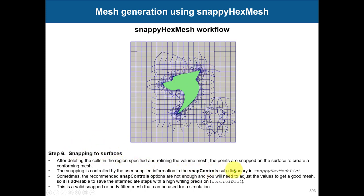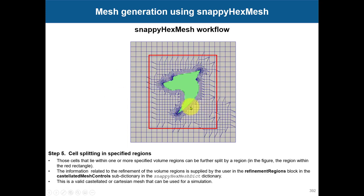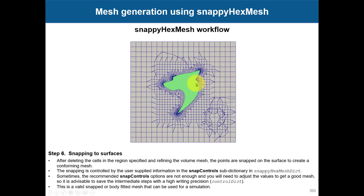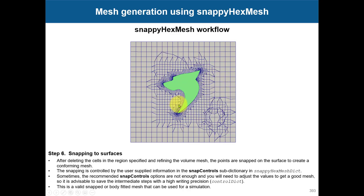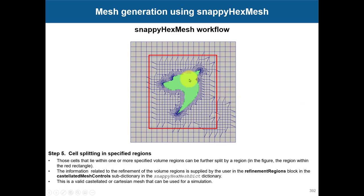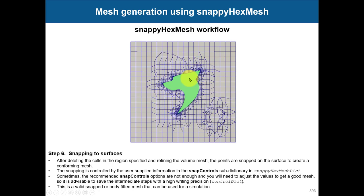The snapping stage makes the Cartesian mesh body-fitted, which is much better than the castellated mesh, but still does not resolve the boundary layer. The snapping stage is controlled in the snappyHexMesh dictionary. Importantly, during snapping there is no mesh refinement - it only makes the castellated mesh body-fitted. The final step is adding boundary layers, also called inflation layers or prismatic layers, to resolve the boundary layer.